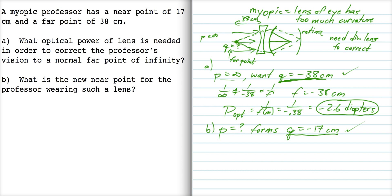And we already know the focal length, so now we can solve for P. So 1 over P plus 1 over negative 17 is equal to 1 over negative 38.